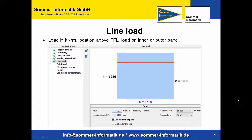The line load is set with the following values: the load in kN per meter, the location above finished floor level, and the load on inner or outer pane. The load on inner pane means the line load acts on the inner pane against the direction of the wind pressure from outside. The line load on outer pane is the default — it means the line load acts on the outer pane in the direction of the wind pressure from outside.